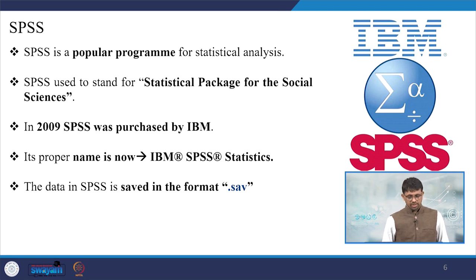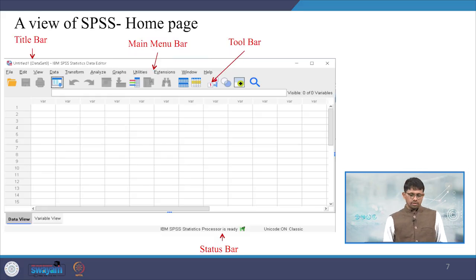In 2009, SPSS was purchased by IBM, so its proper name is now IBM SPSS Statistics. The data in SPSS is saved in the format called dot SAV. The first line is called the title bar, the second is the main menu bar, and the third is the toolbar. On the bottom you see the status bar.